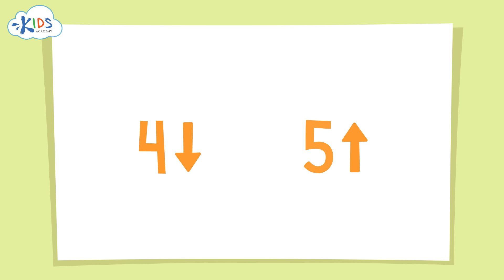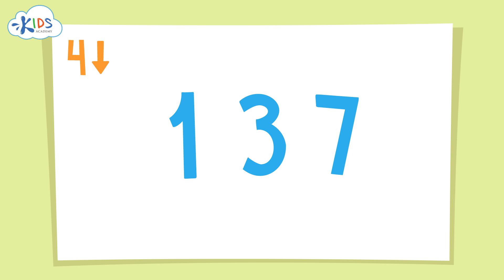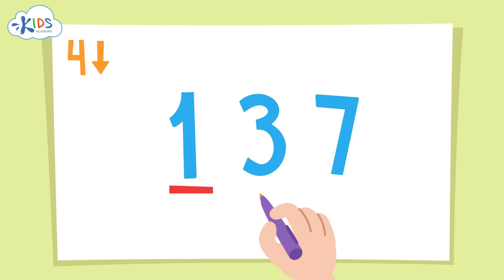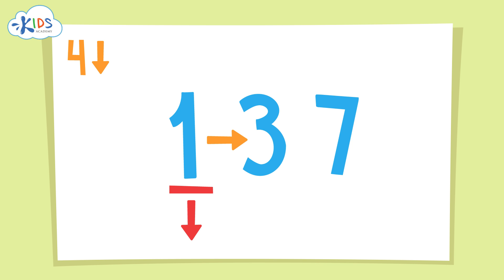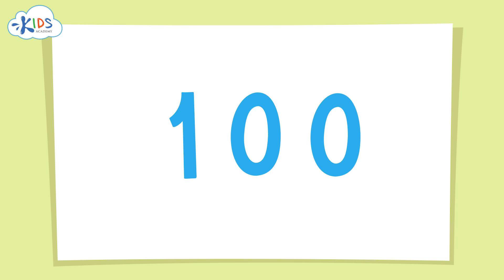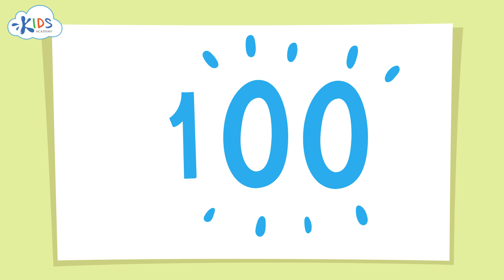The same rule applies for rounding to the hundreds place as it does for the tens. Five is the key number: if it's five or higher you round up, but if it's four or lower you have to round down. For 137, since we're rounding to the hundreds, we look at the number in the tens place. The three in the tens place tells us to round down. We'll round 137 down to 100. You round the number in the hundreds place and make the numbers in the ones and tens places zeros.